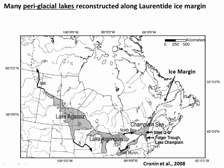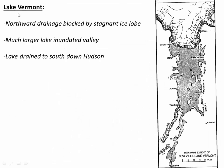We also had a glacial lake here in the Champlain Valley. As the ice lobe retreated, the northern exit of the Champlain Valley was plugged by a big ice lobe, damming up water across the entire valley. This lake was overflowing to the south — actually overflowing down through Whitehall, down the Hudson River, all the way to New York City. This huge lake was called Lake Vermont.